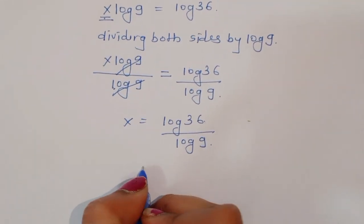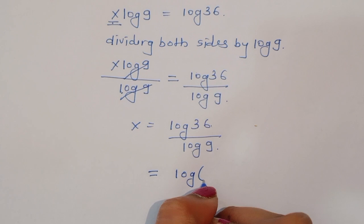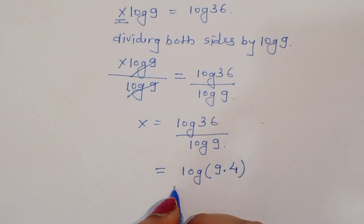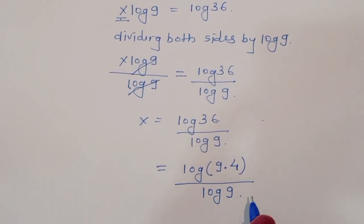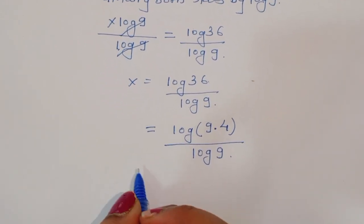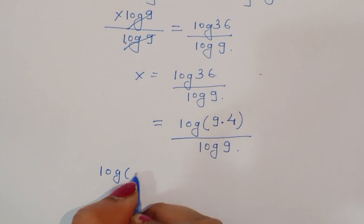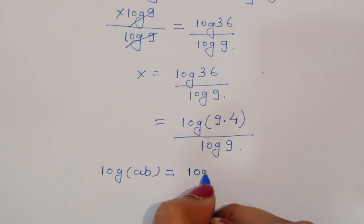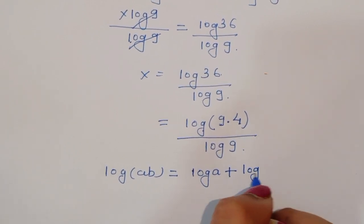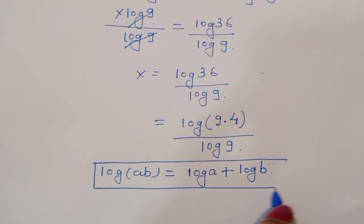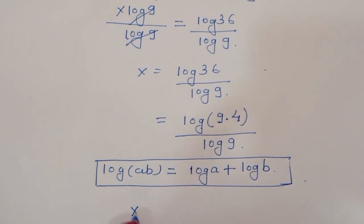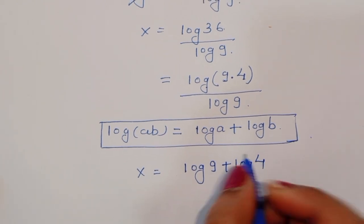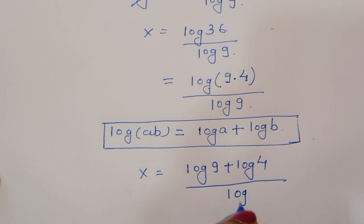Now, 36 we can write as 9 times 4. So x is equal to log of 9 times 4 divided by log of 9. We can apply the formula log of a times b is equal to log of a plus log of b. Using this formula, we can write x is equal to log of 9 plus log of 4, divided by log of 9.